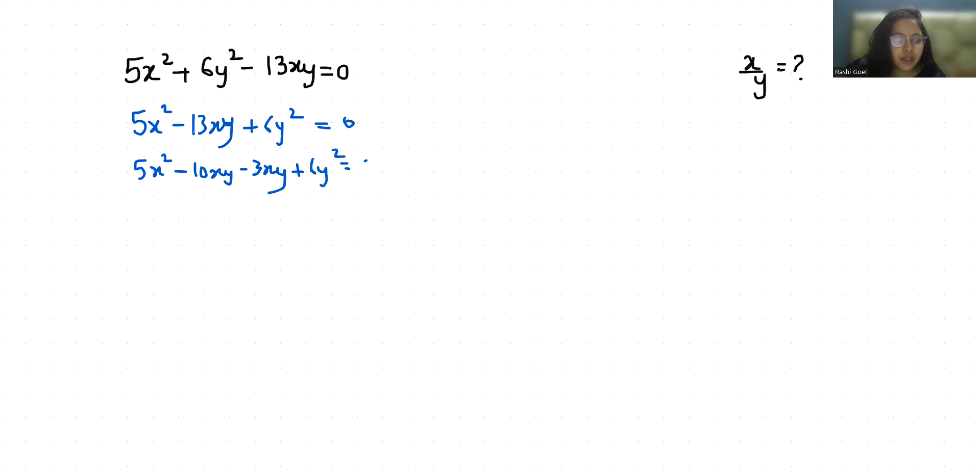From the first two terms I can take 5x as common and from the next two terms I can take negative 3y as common. Now x minus 2y is common.